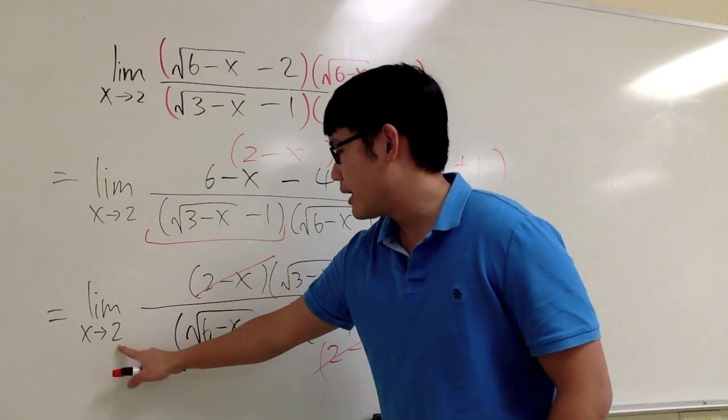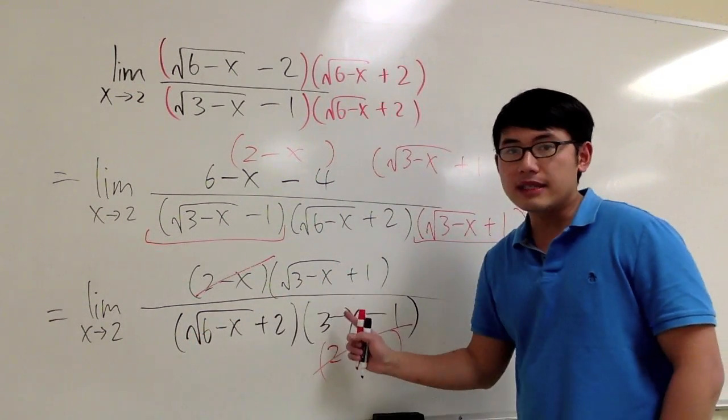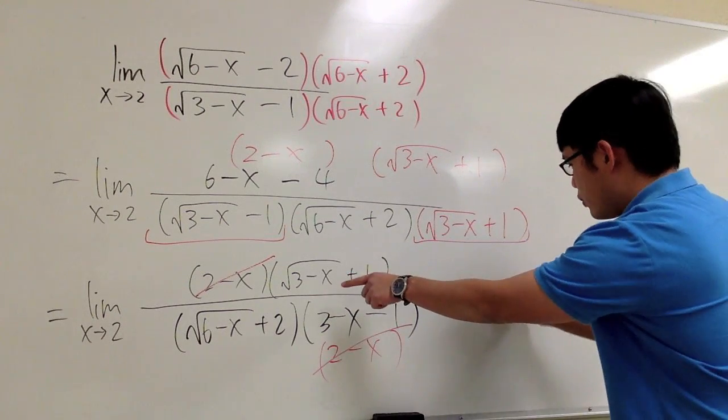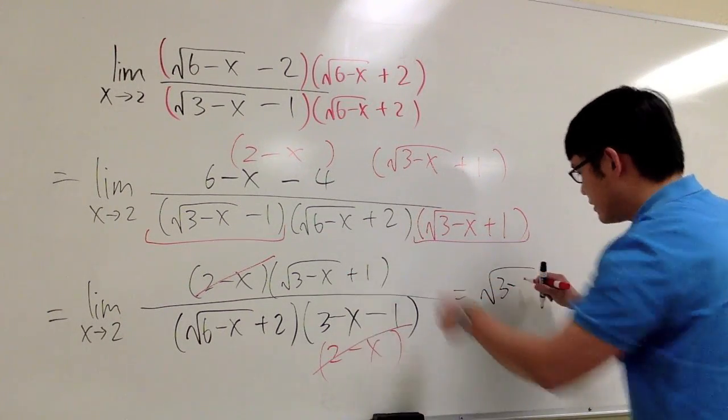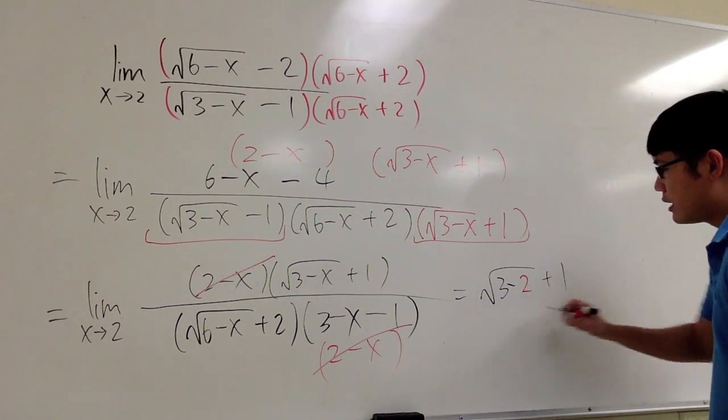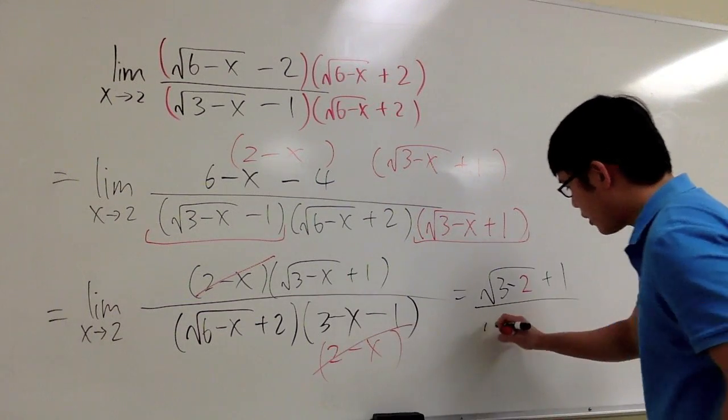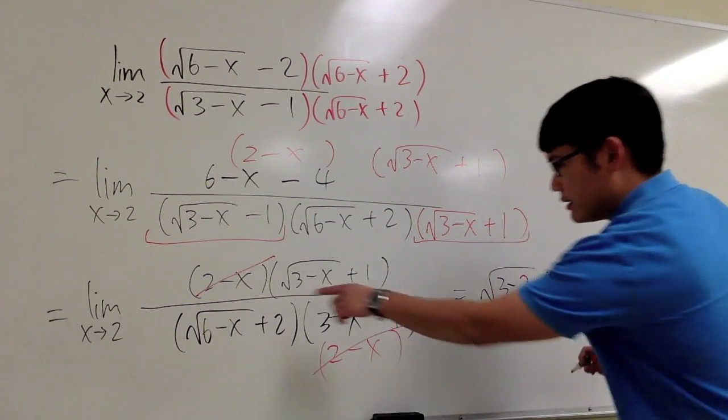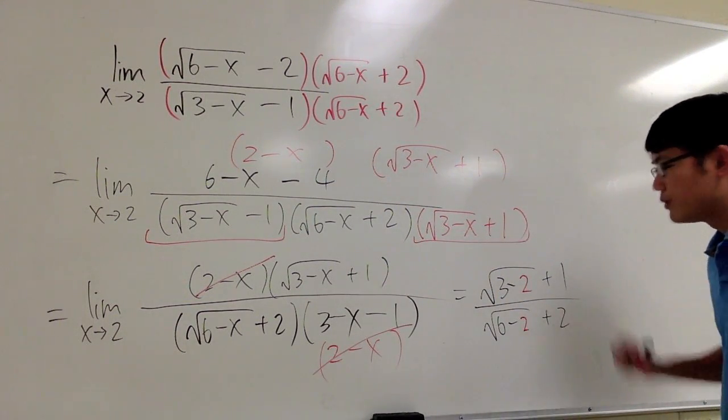Final touch. Plug in the 2 into all the remaining x. So we are going to get square root of 3 minus x is 2, and then plus 1 over square root of 6 minus x, which is 2, plus 2.